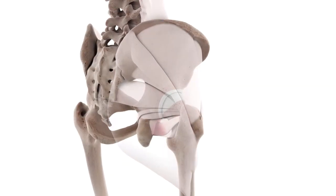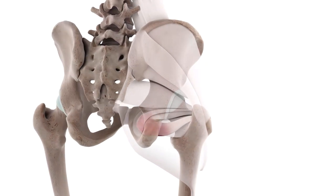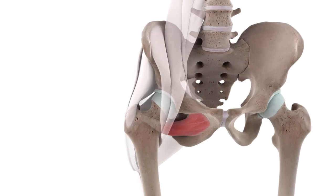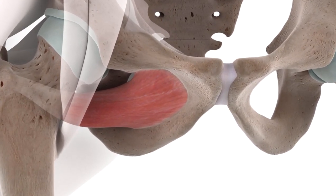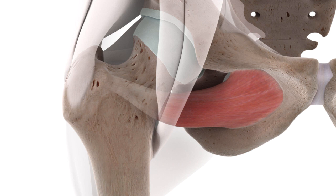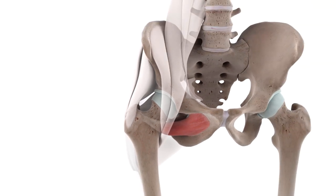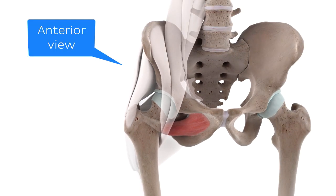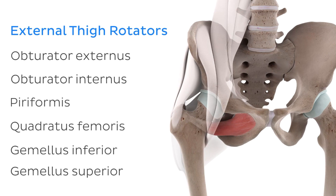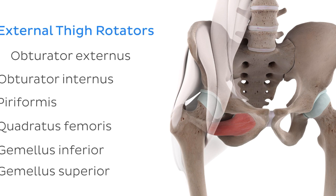Let's begin with an overview of the anatomy of the obturator externus muscle. As we can see from our anatomical model here, the obturator externus is a flat, fan-shaped muscle that originates from the external surface of the pelvis, so we can best see it from an anterior perspective. The obturator externus muscle is part of a group of muscles known as the external rotators of the thigh, or the hip joint, which gives us a clue about its function.